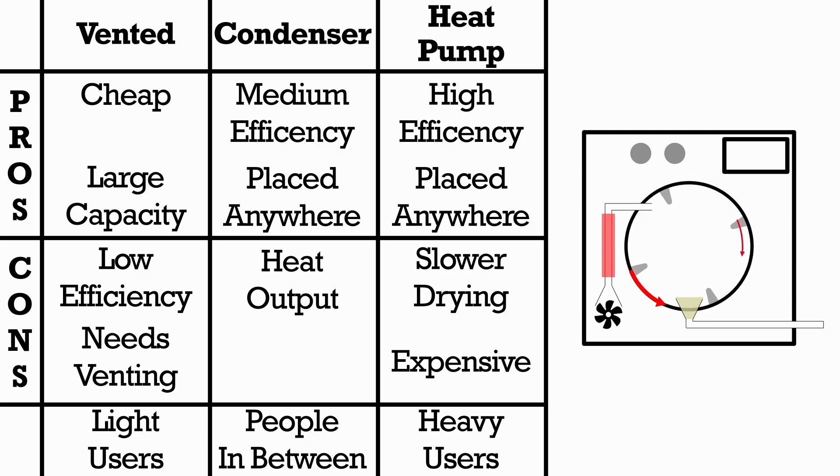Now let's compare the three most common types of dryers. Vented dryers are very popular because they're cheap due to their simple tech. They also have large capacities for a given size as there's no need for components like a heat exchanger and a water tank. However, as we learned earlier, they're the least efficient type of dryer. You also have to be mindful of where they're placed inside the house as they need to be close to an outlet such as a window or a vent to the outside.